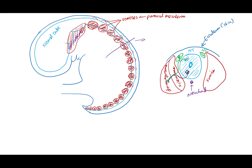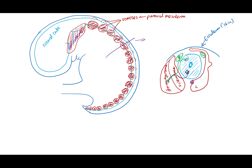Soon, the sclerotome and dermomyotome will start to morph. We'll just look at this one side of the body first. The sclerotome is starting to envelope the neural crest and the neural tube. And as the sclerotome is sprouting some lateral processes, that triggers the myotome to separate into the ventral and dorsal group of myotomes, which are called hypomeric and epimeric muscle groups, respectively. And the dermatome is starting to spread out just under the ectoderm.